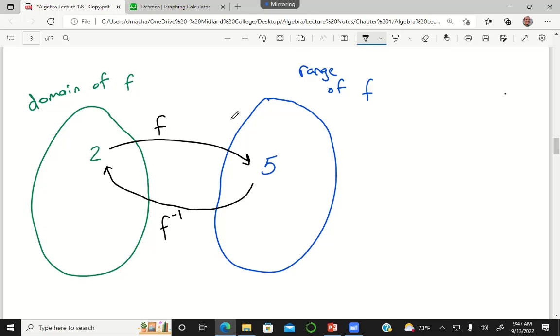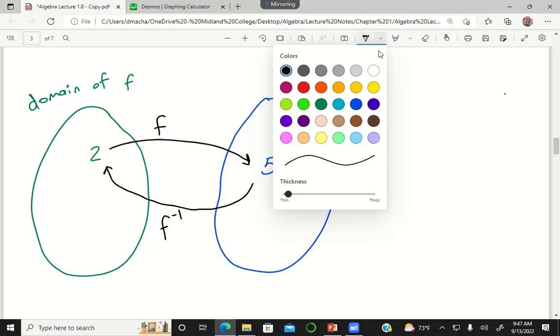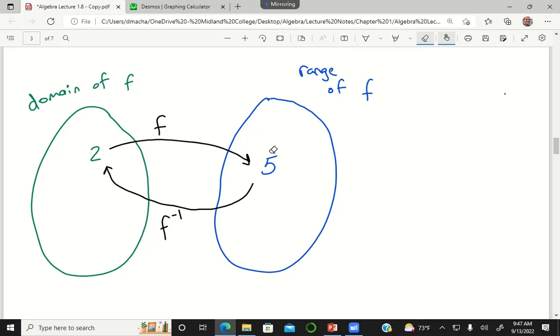Now the reason I told you that only one-to-one functions can have an inverse is because what if this function were something different. Like let me actually just expand this. So let's say that f(x) is equal to x squared plus 1, then 2 squared plus 1 is 5, and so on.